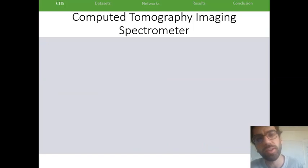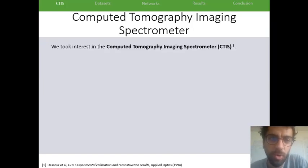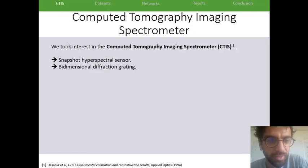In this work we focused on a kind of sensor called Computed Tomography Imaging Spectrometer, or CTIS for short, which is a sensor developed in the 90s. It's a snapshot hyperspectral sensor based on a bi-dimensional diffraction grating.